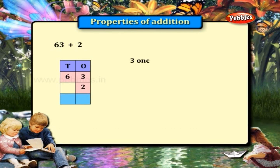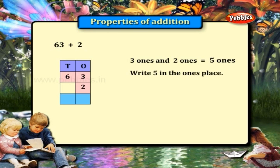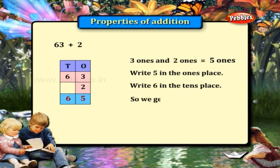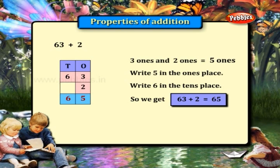63 plus 2. 3 and 2 are in the ones place. 3 plus 2 is equal to 5. So write 5 in the ones place. Write 6 in the tens place. And we get the answer 63 plus 2 is equal to 65.